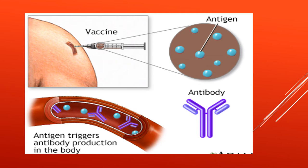In this image, you can see that on injecting the vaccine — which is nothing but the antigen or weakened microbe — it triggers antibody protection in the body. That means the antibody is ready to fight against that particular microbe in the future.